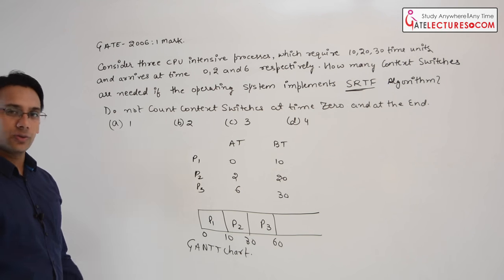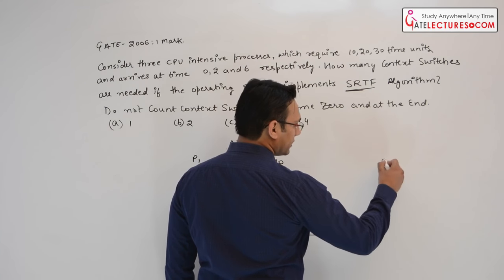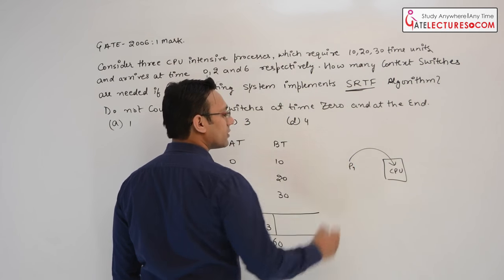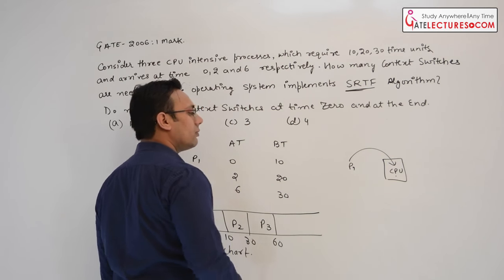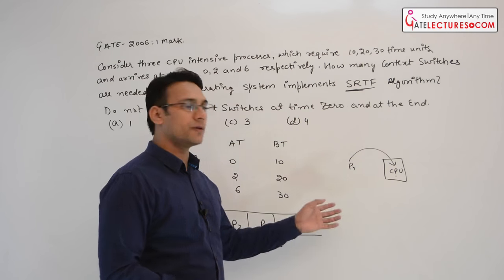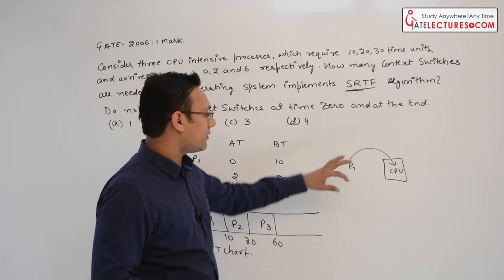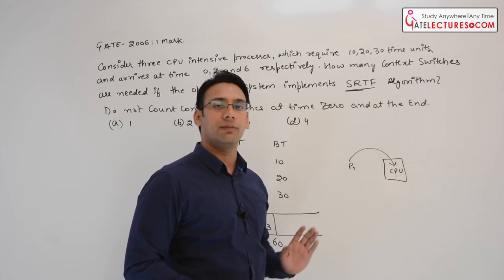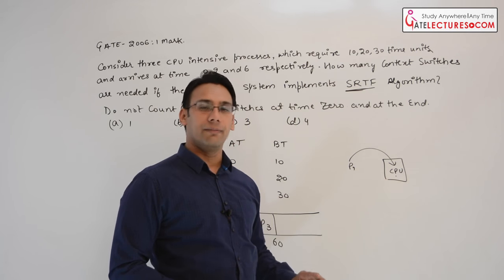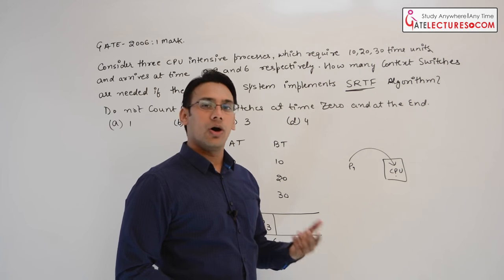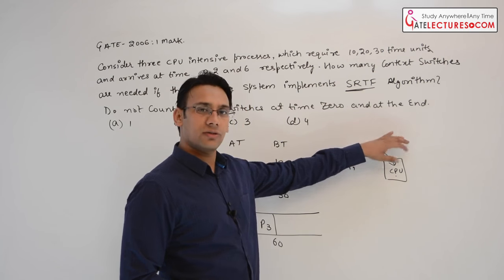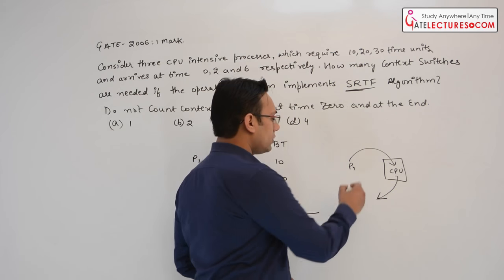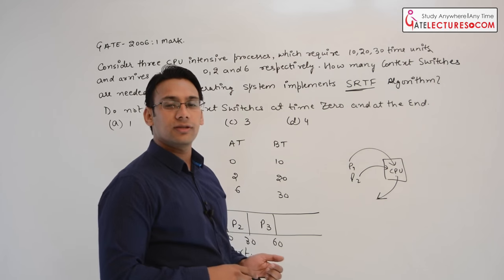Now let us count how many context switches there are. A context switch occurs when one process is removed from the CPU and another is brought in. A process can leave the CPU either because it has completed or because of preemption. When we take process P1 out of the CPU and bring process P2 in, that is called a context switch.